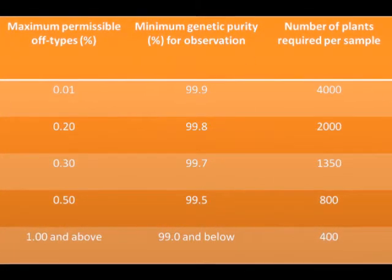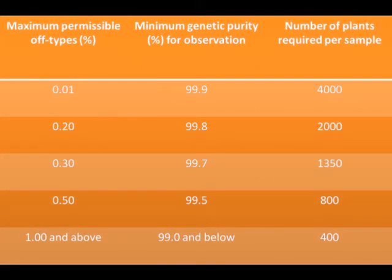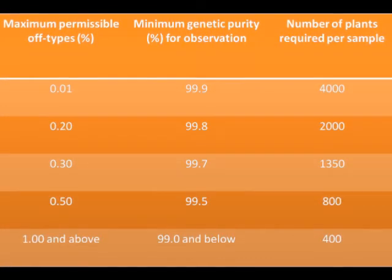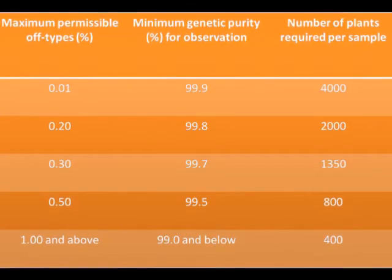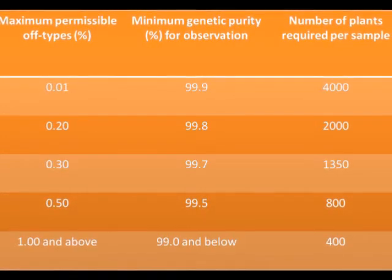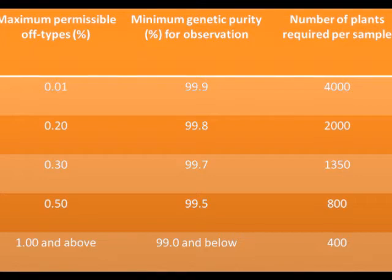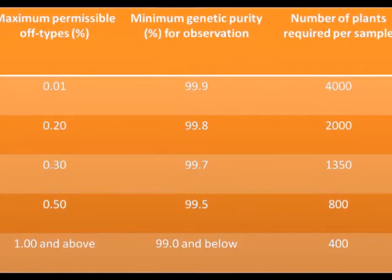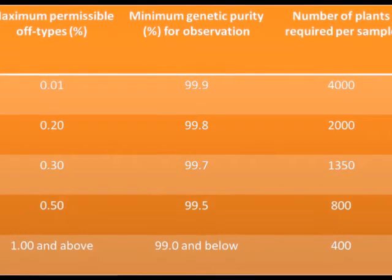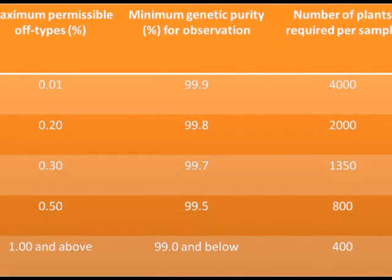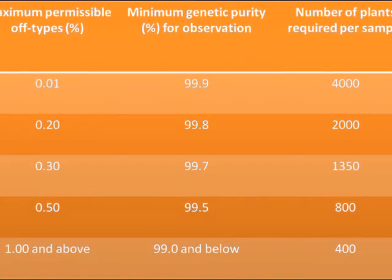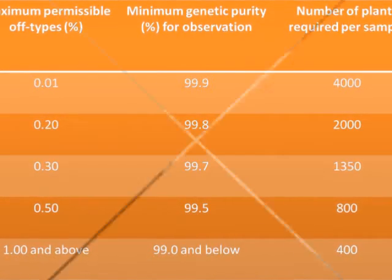This table shows the minimum certification standards for genetic purity and maximum permissible limit for off-types. The off-types level will vary according to plant population. For example, when the number of plant population is 4000 plants, the minimum genetic purity percentage is 99.9% and maximum permissible off-types is 0.01%.